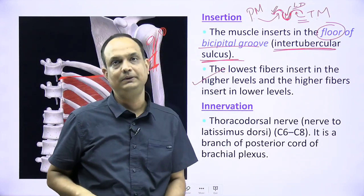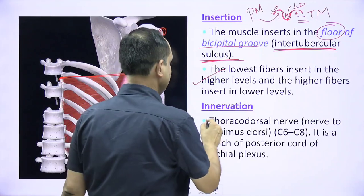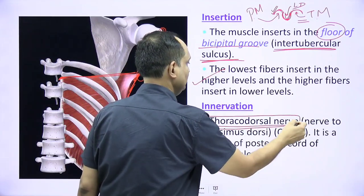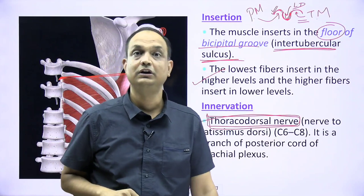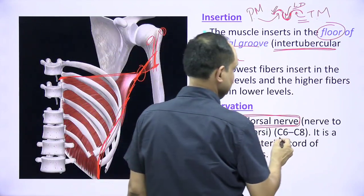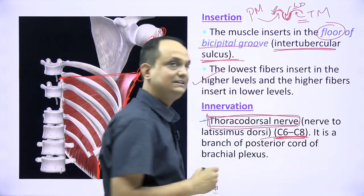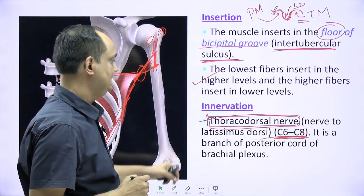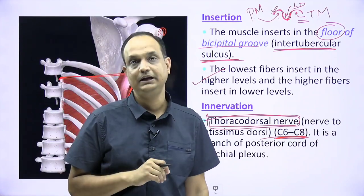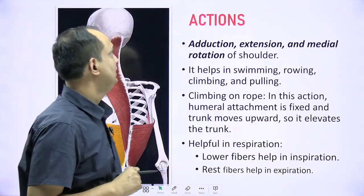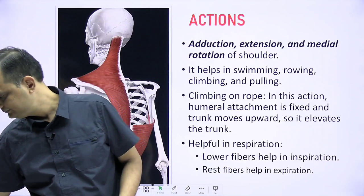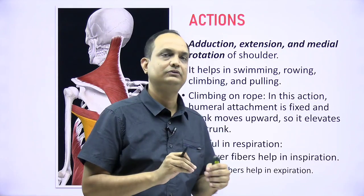The nerve supply of latissimus dorsi is the thoracodorsal nerve, also known as the nerve to latissimus dorsi, with a root value of C6, C7, C8. It is a branch of the posterior cord of the brachial plexus.